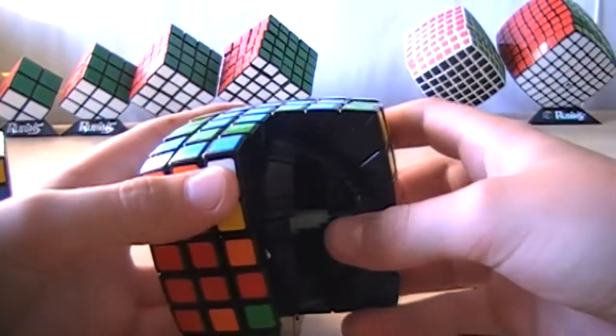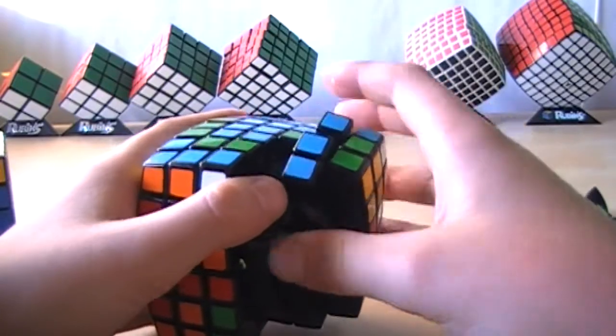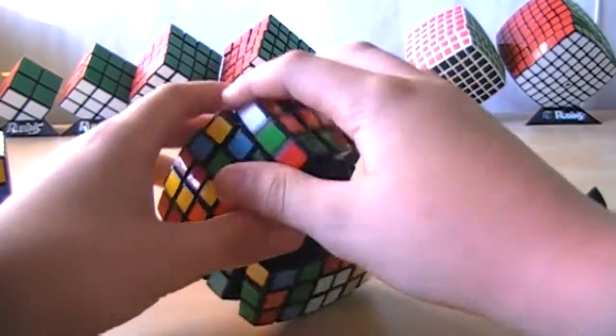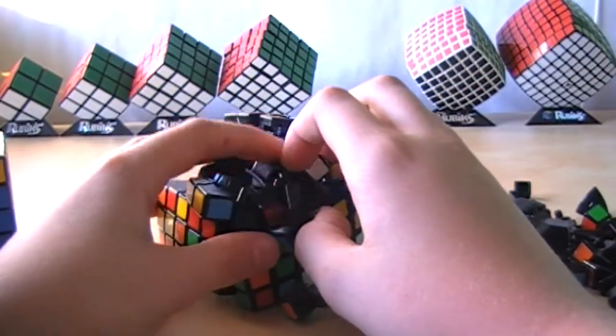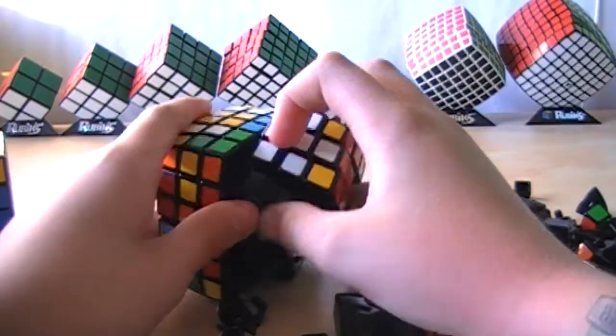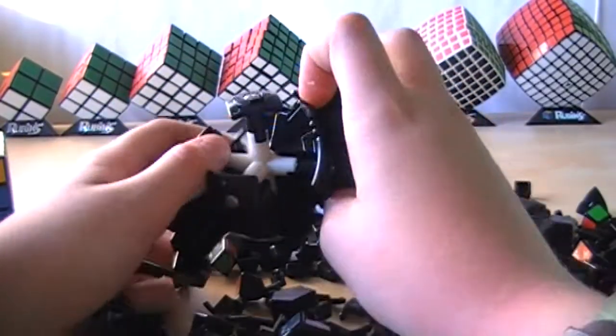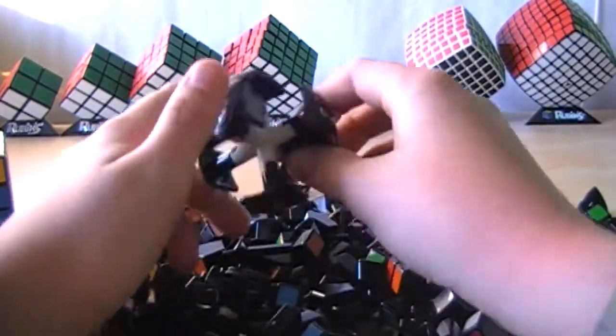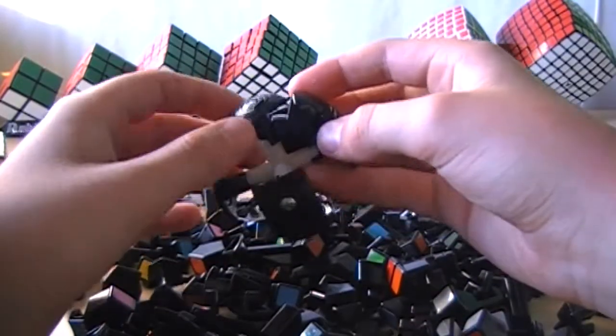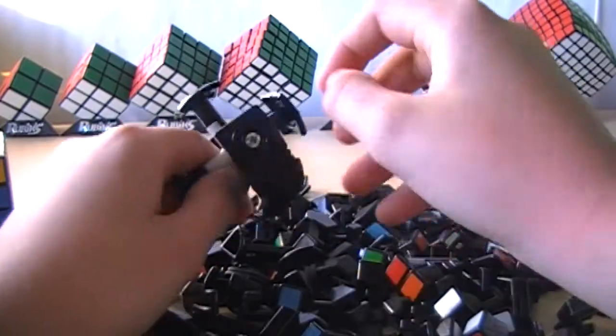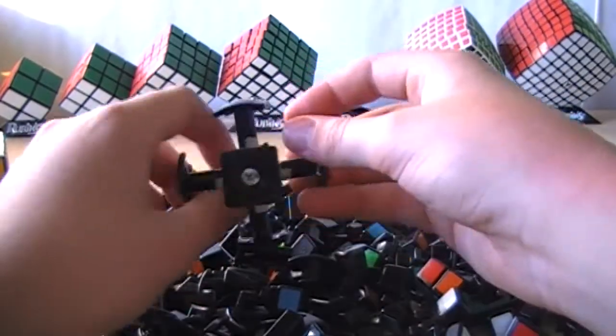And just completely take it apart. Once you get to this stage, you can kind of turn one layer and then turn another layer, and you'll see that the center is just sitting out. After you've got all these pieces out, you may notice there are a couple inner pieces. You may have to take those out. But here's the core.